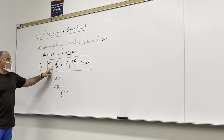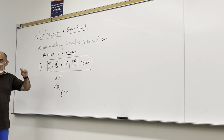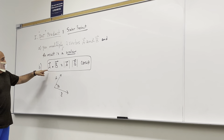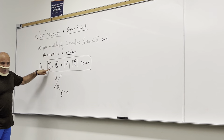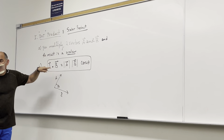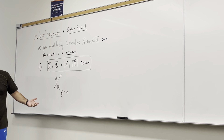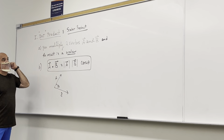We already applied the dot product when we calculated the work done by a force. There, we multiplied a force vector by a displacement vector — they have different units, they're not the same type of vector, but you can multiply them.